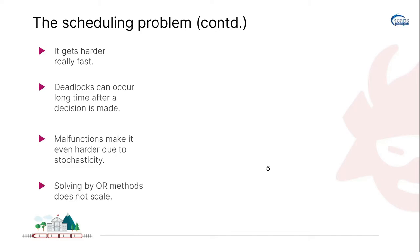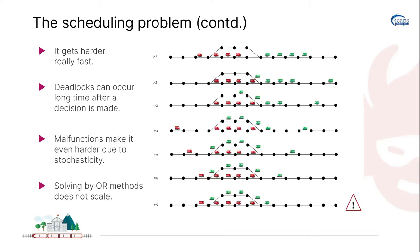This is why solving such complex scenarios using OR doesn't really scale well. In this example, two groups of trains in red and green are moving in opposite directions and want to use the same shared track. Initially it looks like things are under control, but if a delayed green train arrives at time step 2, the red trains must wait. If another delayed red train arrives at time step 4, the green trains will never be able to exit their track, meaning the red trains will never be able to proceed — resulting in a complete deadlock.